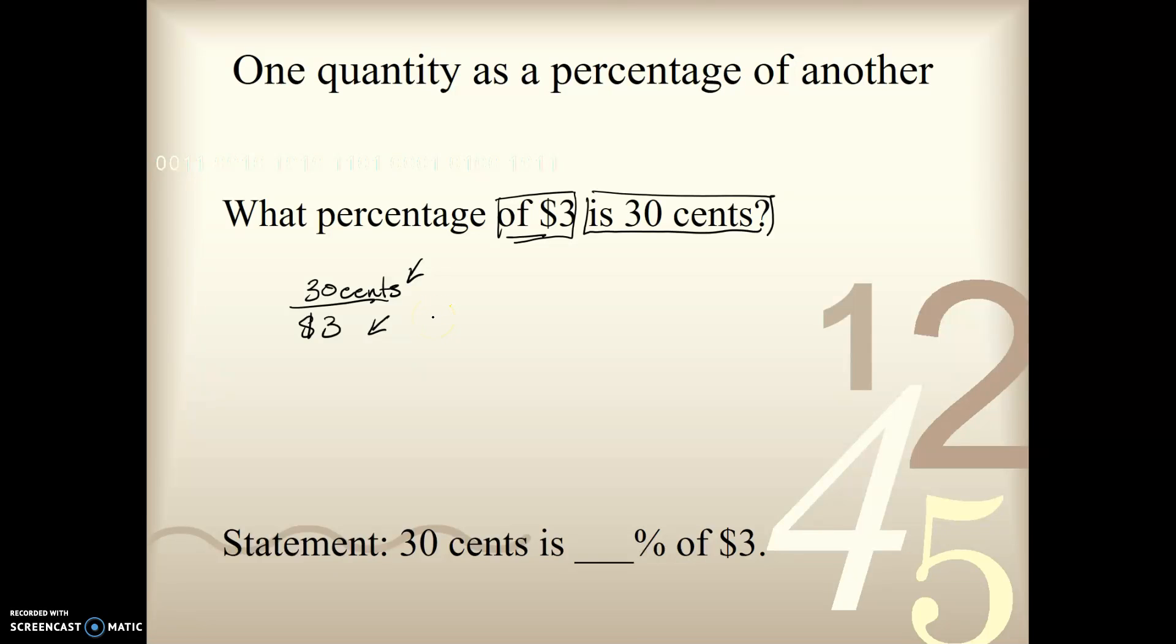It's always going to be, pretty much always, going to be easier to convert the larger unit to the smaller unit. So let's keep our 30 cents, and let's convert dollars to cents by multiplying it times 100. $3 becomes 300 cents. And we want to know our percentage, so let's divide by 3 over 3. And of course, we get 10 on top, and we get 100 on the bottom, and that equals 10%, so 30 cents is 10% of $3.